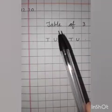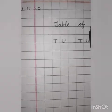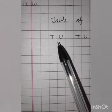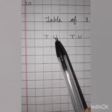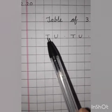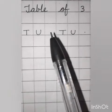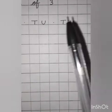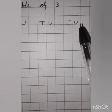Today we will learn and write table of three. From the margin line, leave two boxes and then write down T-U. U stands for unit and T stands for tens. Leave one box, again write down T-U. Leave one box, again write down T-U.